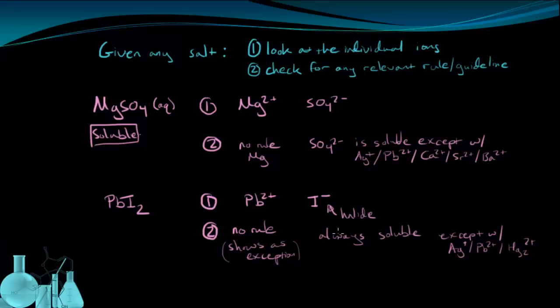So as we said, iodine is a halide, which means that it's always soluble except when it's with the ions silver, lead, or mercury 1. And we can clearly see that this iodide is with lead, so it's an exception to being always soluble. Therefore, this is going to be insoluble.